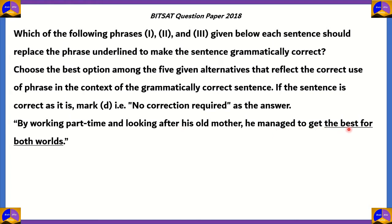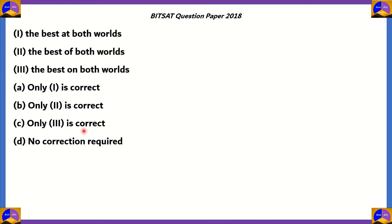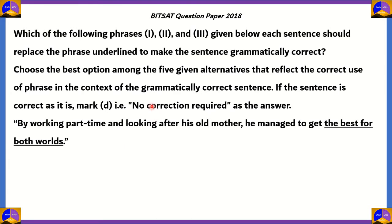'The best for both worlds' is not the correct option. The correct option will be one of the three given, or it can be the same sentence. The three options are: one — 'the best at both worlds,' two — 'the best of both worlds,' three — 'the best on both worlds.' So which of the given options is correct? Is only one correct, only two correct, only three correct, or are no corrections required?